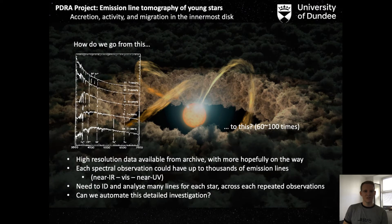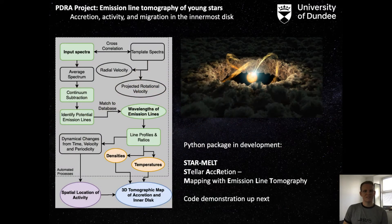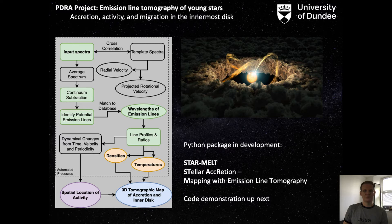And the challenge here is clearly how can we go from these high resolution data to the maps of the accretion, and how can we do this lots of times for lots of data? And this is where StarMelt comes in. So it's designed to carry out as much of the identification and fitting of the lines automatically as possible. And if your research requires identification of emission lines, then StarMelt might be useful for you as well.